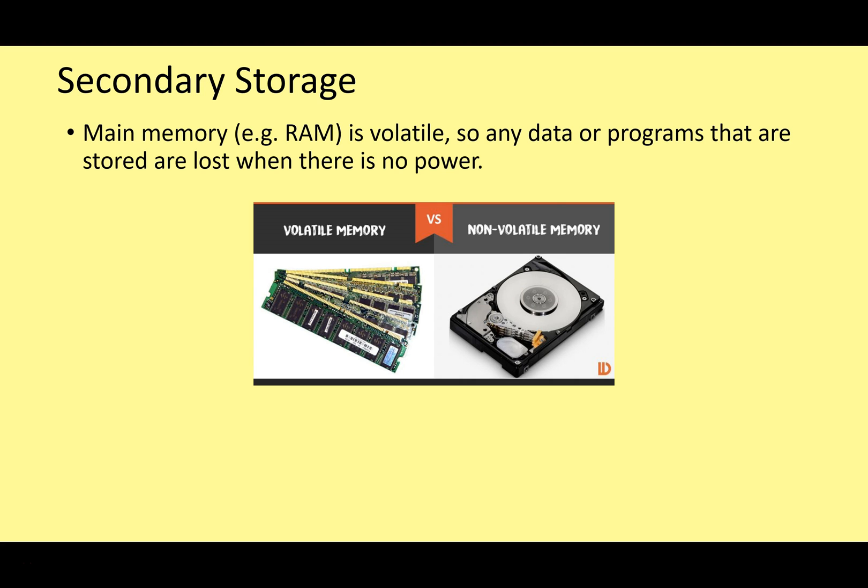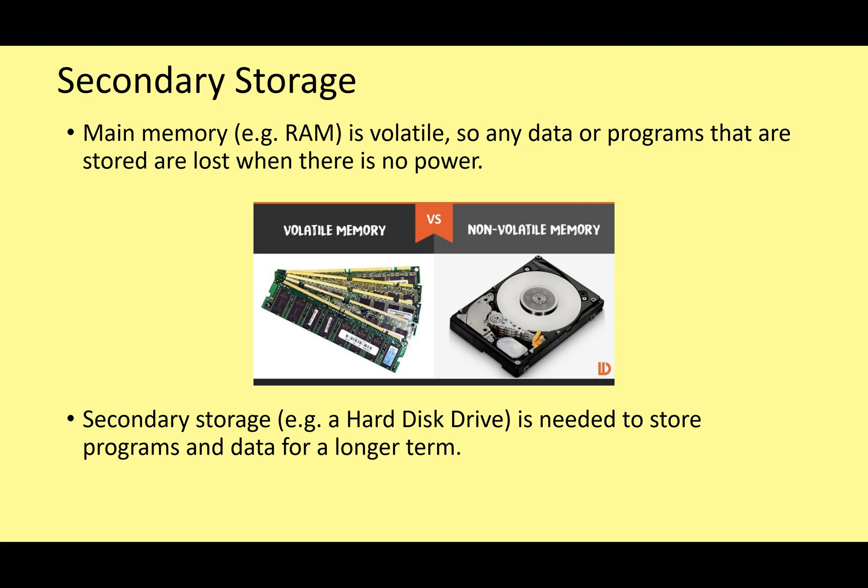If you remember the last video on main memory, main memory is volatile. That means the data and programs stored in main memory — for example, RAM — are lost when there's no electricity. However, secondary storage, for example your hard drive, your SSD, or a DVD, doesn't require power in order to save its contents. So even when you turn the power off on your computer, the contents of your hard disk are there when you restart it. Whereas with RAM, when there's no power, you lose everything.